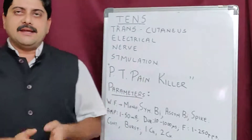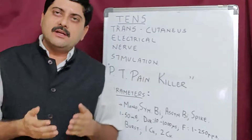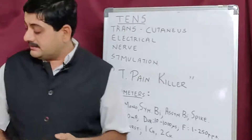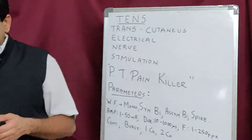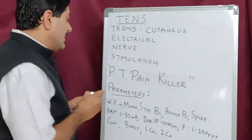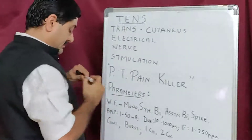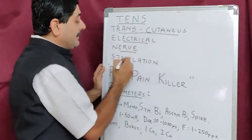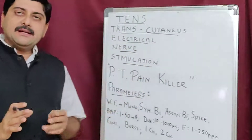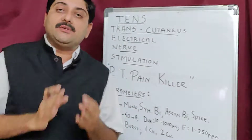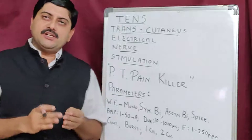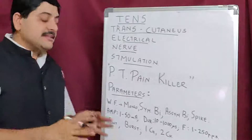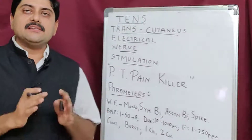Welcome to today's class. Today's lecture is on the second part of electrical stimulation, that is transcutaneous electrical nerve stimulation or TENS. Transcutaneous means across the skin — cutaneous means skin or superficial, and trans means across. So any current given across the skin is known as transcutaneous electrical nerve stimulation.